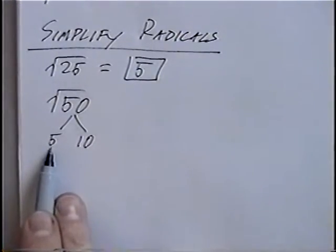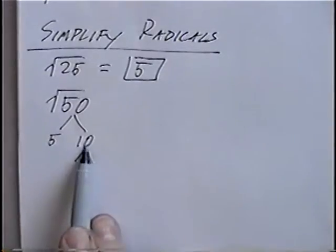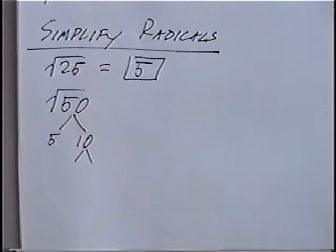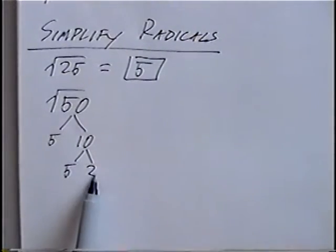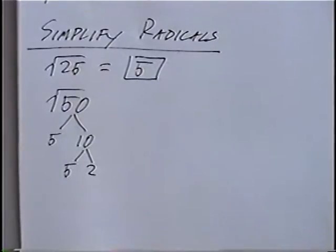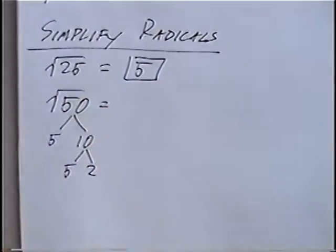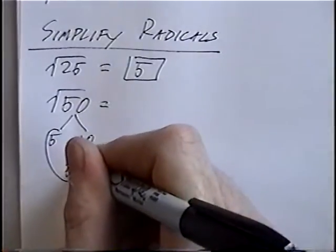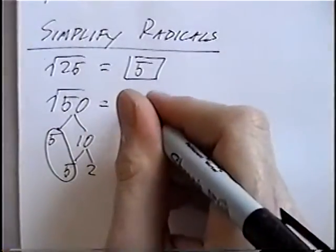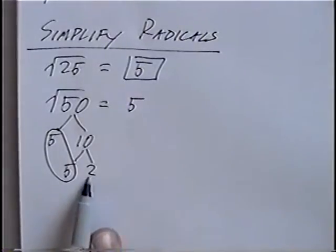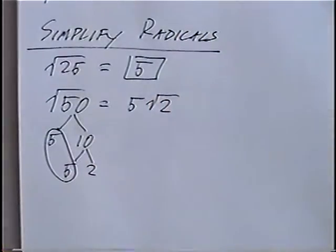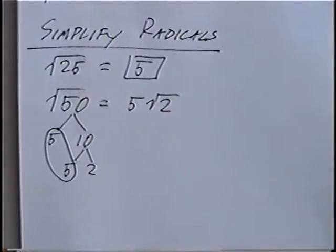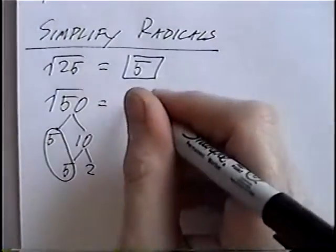5 is a prime number, which means 5 is the only number that multiplies to get itself, so we won't factor that anymore. But the number 10 — we can pick two numbers that multiply to get 10, in this case 5 and 2. Your factor tree is complete when you're left with numbers that you can't factor anymore. To get your final answer, you want to circle your pairs of numbers. We have a pair of 5s, which would be our first number. Any single number at the bottom of the factor tree that does not have a pair goes inside the radical. In this case our final answer would be 5 radical 2.